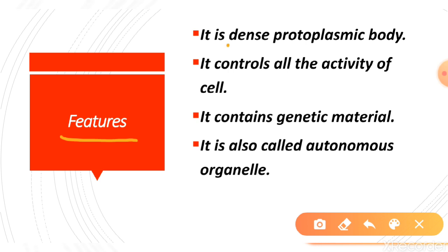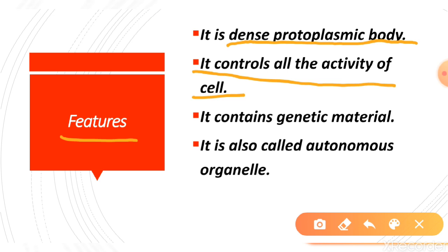The nucleus is a dense protoplasmic body — protoplasmic means it is liquid in nature. The nucleus controls all the activity of the cell. How does it control activity? Because it has genetic material, and genetic material means DNA and RNA, which is why it governs the other activities.